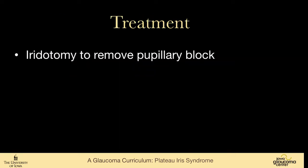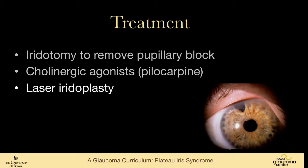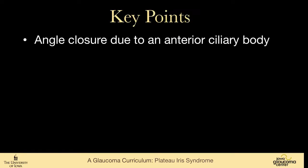The treatment: we do iridotomy to relieve the pupillary block. One can use cholinergic agonists like pilocarpine. Laser iridoplasty can be very effective in shrinking the iris out of the angle, and perhaps even shrinking the ciliary body back some. It's important to do periodic gonioscopy, as these angles can become narrow again later on after iridoplasty.